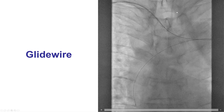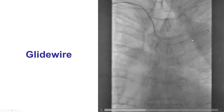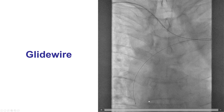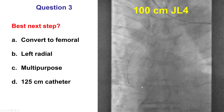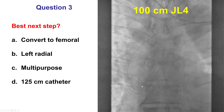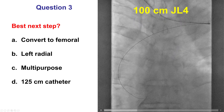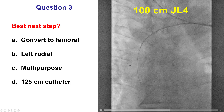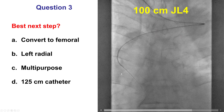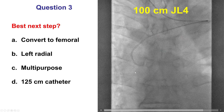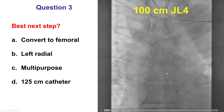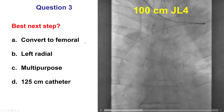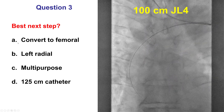This is the glide wire that goes around and then enters into the ascending aorta, all the way down to the coronary cusps. We advanced our GL4 catheter all the way down; however, the catheter could not really reach all the way to the left coronary ostium. So what would be the best next step?